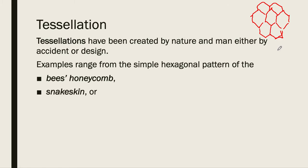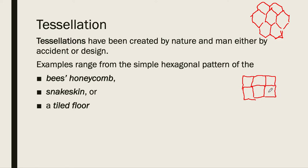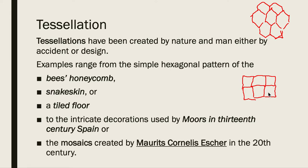The snake skin is another example — I'm going to give you a picture of that. A tiled floor is a very basic example of a tessellation; if you have square tiles, it's covering a plane with replicas of the same thing. And then to the intricate decorations of the Moors in Spain in the 13th century, and the mosaics created most famously by Maurits Cornelis Escher in the 20th century.